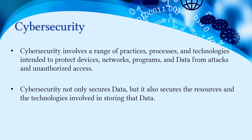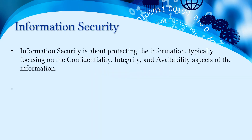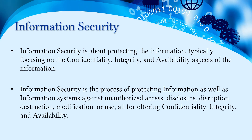So basically, cyber security not only secures the data but also secures the resources and technologies involved in storing and processing the data. Information security, on the other hand, covers both digital and non-digital information — for example, confidential information printed on paper is also information. Information security deals with three important things: confidentiality, integrity, and availability of the information, regardless of where it is stored.